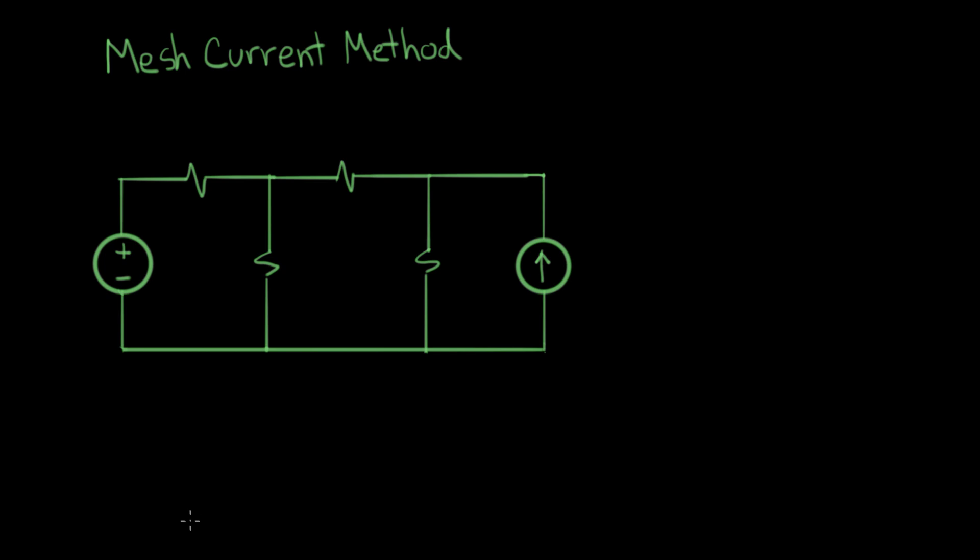Now we're going to discuss the second of two popular ways to analyze circuits, and this one is called the mesh current method. This is actually one of my favorites. There's a fun spot where we make up currents flowing around in circles inside the circuit, and it's interesting.